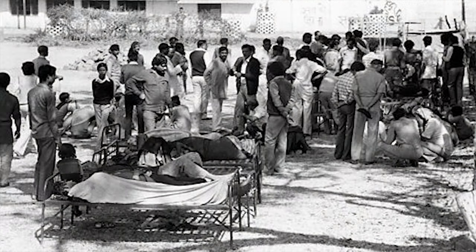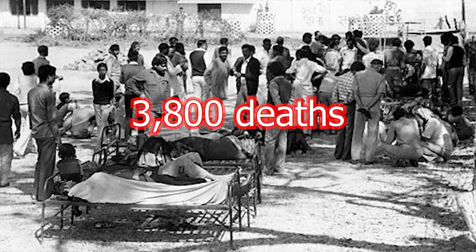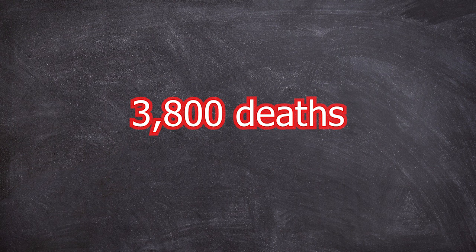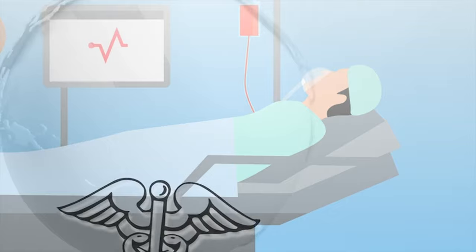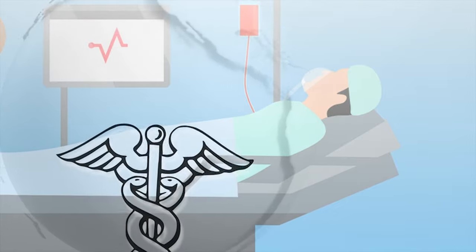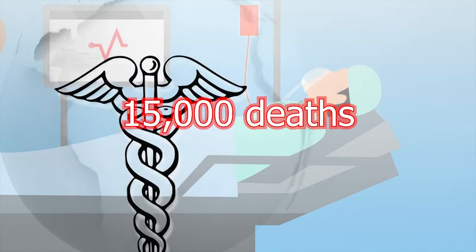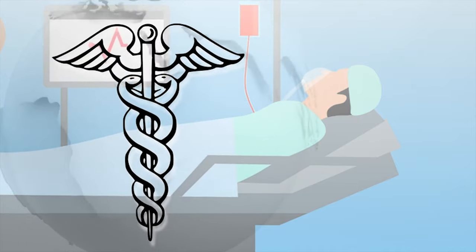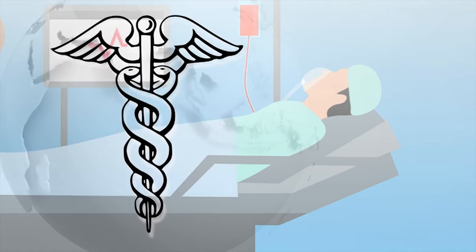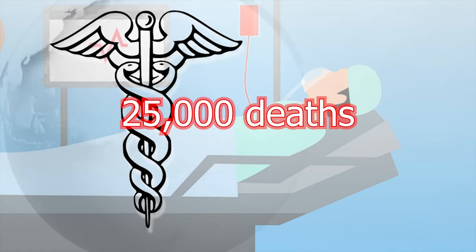Within hours, the streets of Bhopal were littered with human corpses, as well as the carcasses of buffaloes, cows, dogs, and birds. An estimated 3,800 people died immediately. According to data from the Indian Medical Research Center, the MIC gas leak killed more than 15,000 people, while Amnesty International's estimate speaks of more than 25,000 victims.